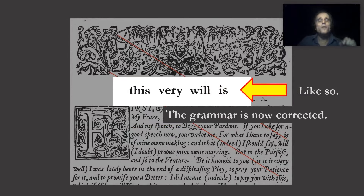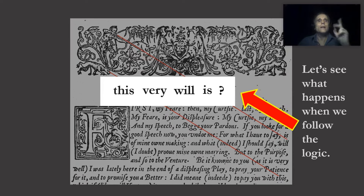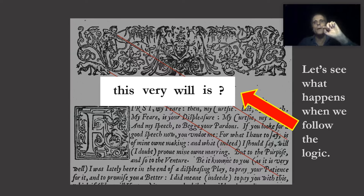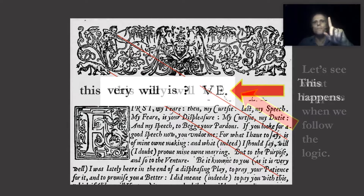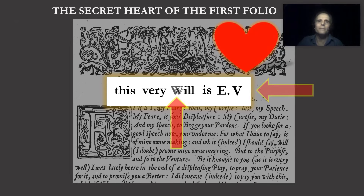The grammar is now corrected: 'this very will is.' But what is this very will? If we continue upward we see a colon, a comma, a Cali Greyhound, a vine, and perhaps a hare — that still doesn't make sense. But when we follow the logic, traveling backward along Eros' sight line, we get the word acrostic: 'this very will is E.V.' — presenting what I call the secret heart of the first folio.